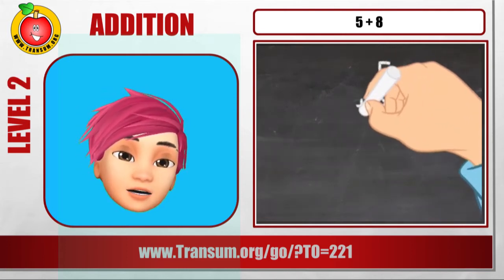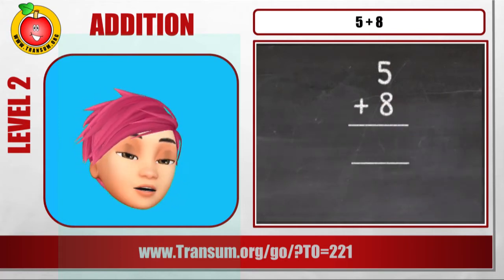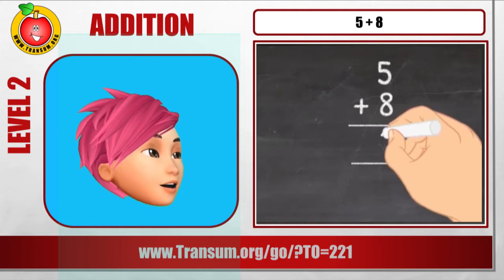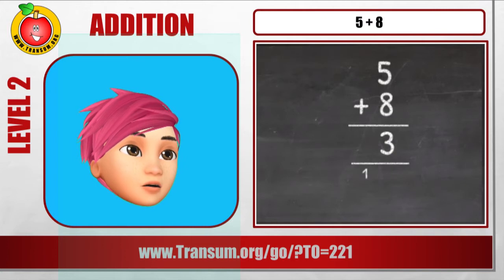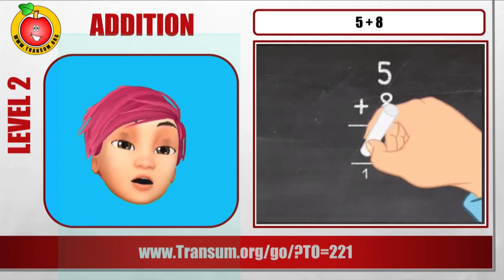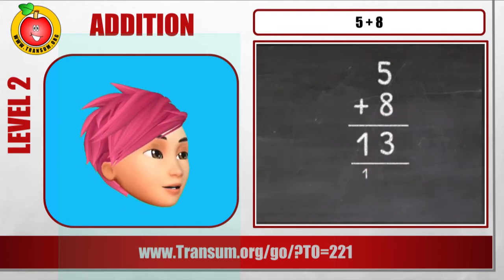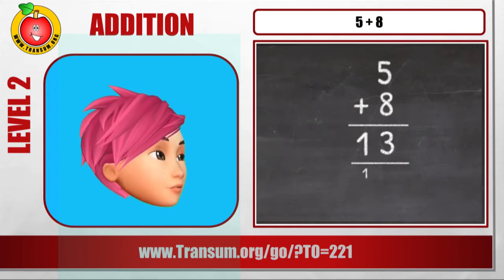Five plus eight. So we're going to add together the five and the eight in the ones column and five plus eight is thirteen. So that's one ten and three ones. So we write the three in the ones column and the one is carried over to the tens column. So that's how we get the answer thirteen. Okay, straightforward.